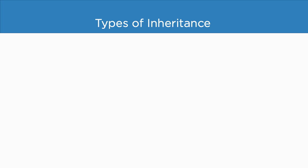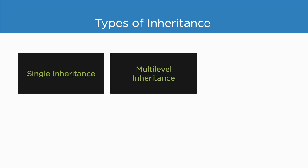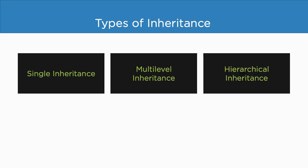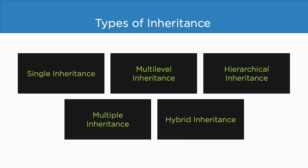Let us now see the different types of inheritance in C++. The first and most basic form of inheritance is single inheritance. The second is multilevel inheritance. Next is hierarchical inheritance. Then we have multiple inheritance. And last but not least, hybrid inheritance.